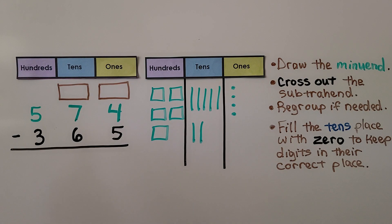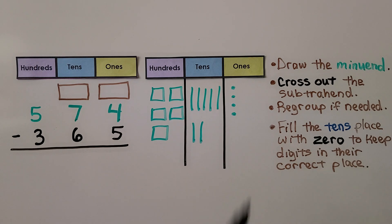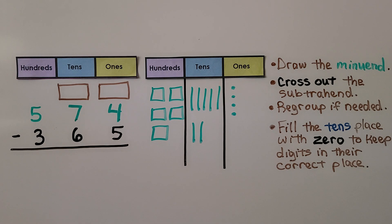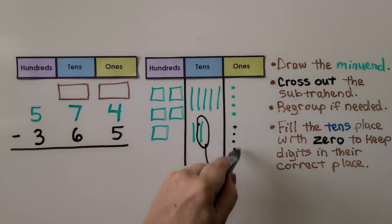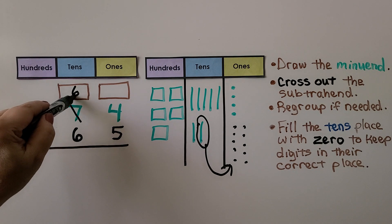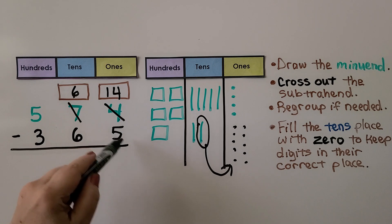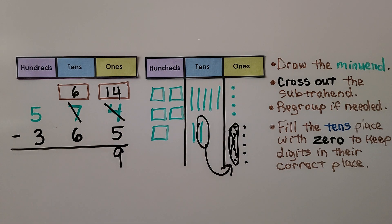We have 574 minus 365. We start by drawing the minuend: five hundreds, seven tens, four ones. We need to subtract three hundreds, six tens, five ones. We need to regroup because we can't take five away from four ones. So we're going to take one of the tens and move it to the ones place as ten ones. Now there are only six tens, and instead of four ones, we have fourteen ones. Now we can take five away, leaving nine ones. Fourteen minus five is equal to nine.